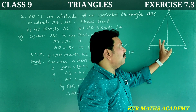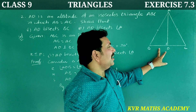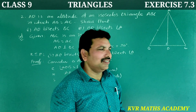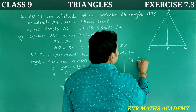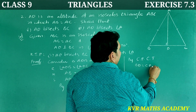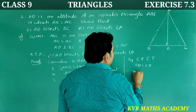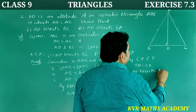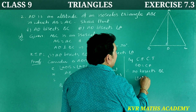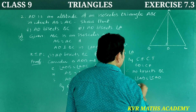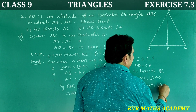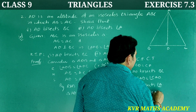Since the two triangles are congruent, by CPCT: BD is equal to CD, and angle BAD is equal to angle CAD. Therefore, by CPCT, BD is equal to CD — hence AD bisects BC. In the same way, angle BAD is equal to angle CAD — therefore AD bisects angle A. Hence proved.